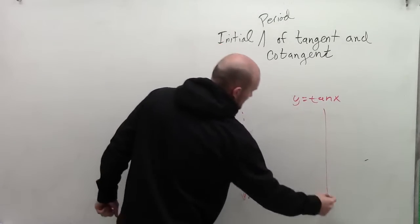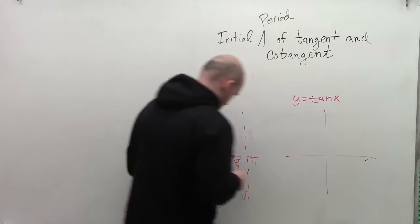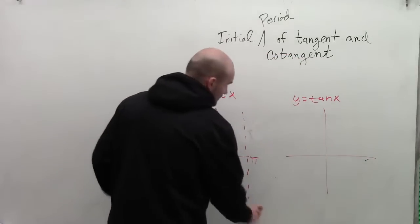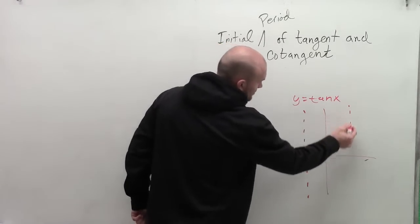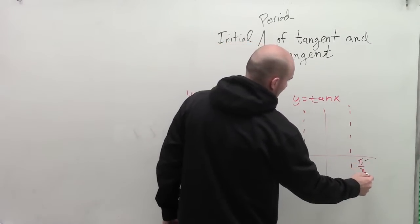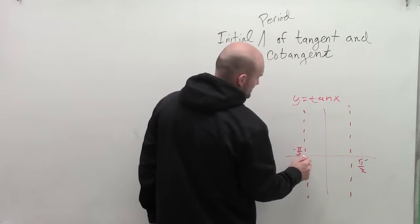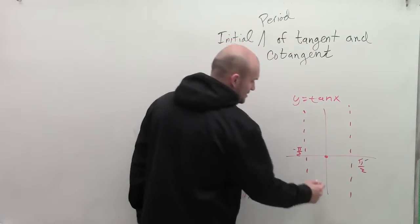Then we look at the tangent function and get a rough idea. The tangent function has two asymptotes on its initial period, which is at pi halves and negative pi halves, and it crosses at 0.